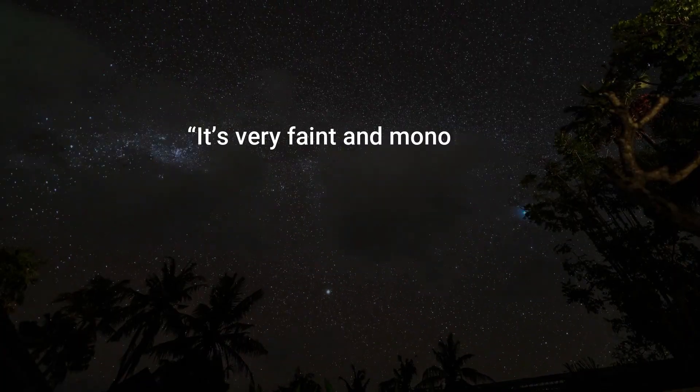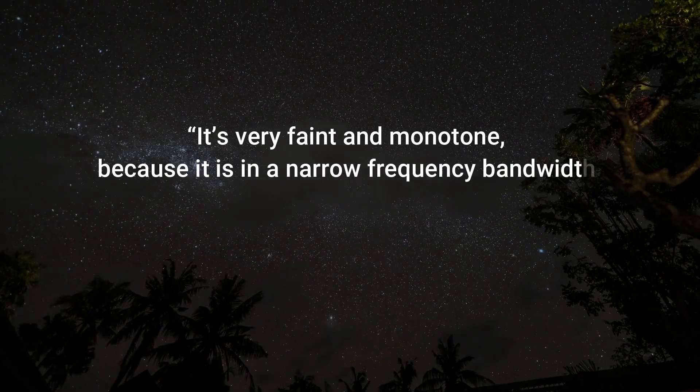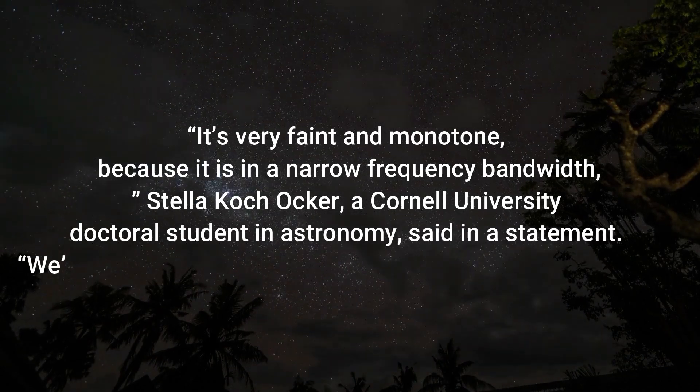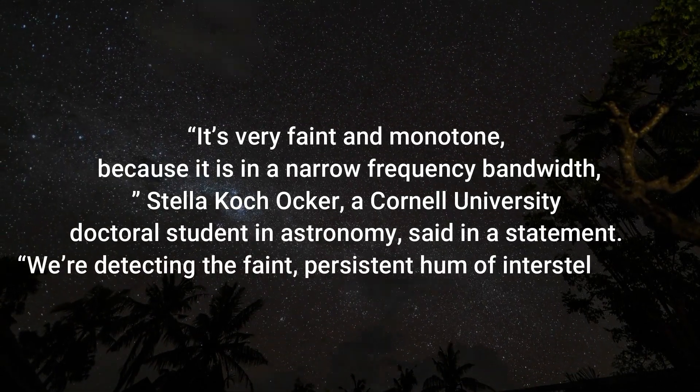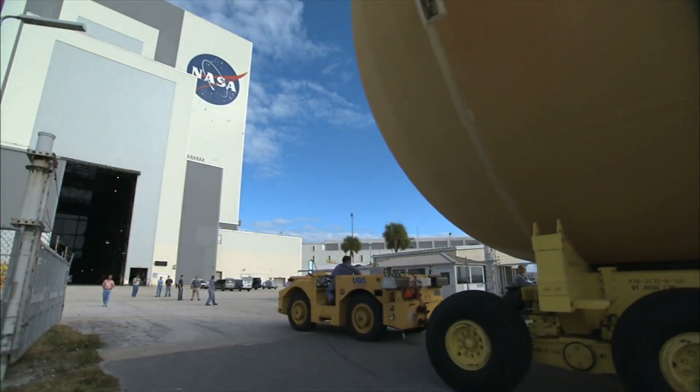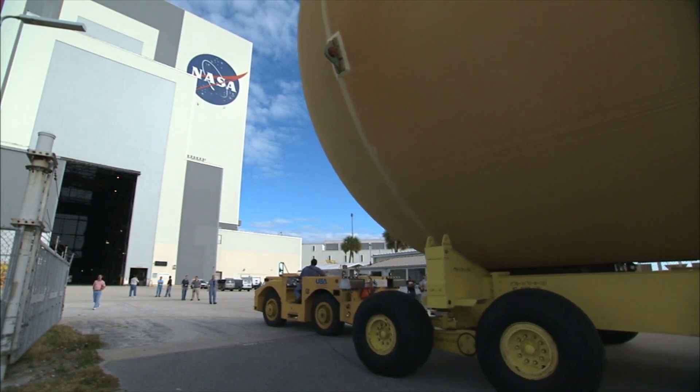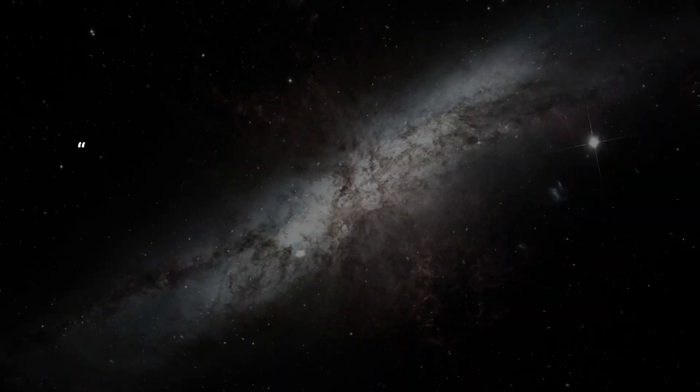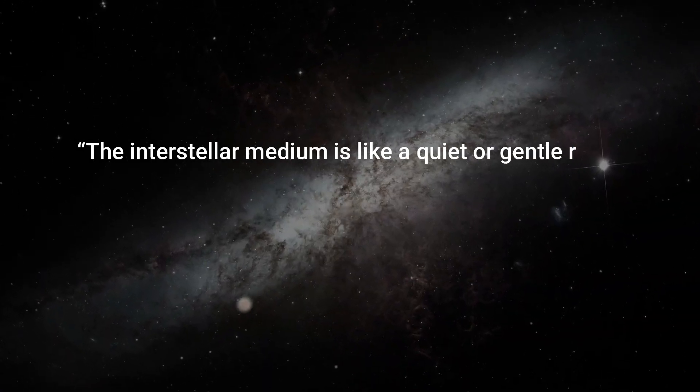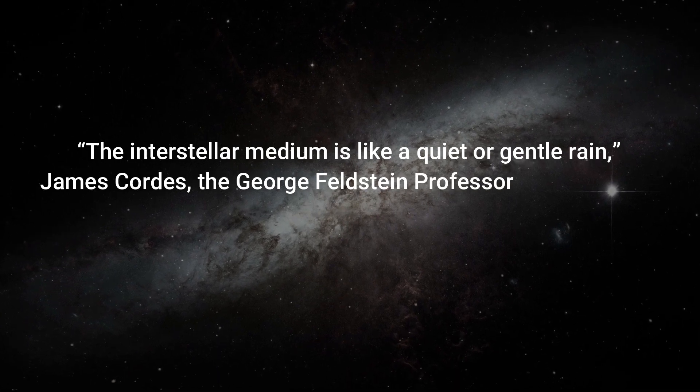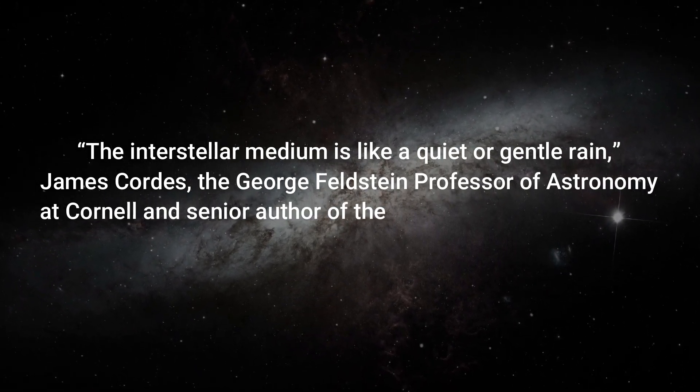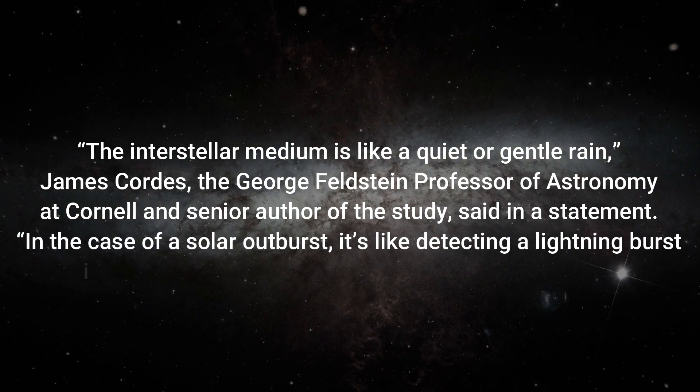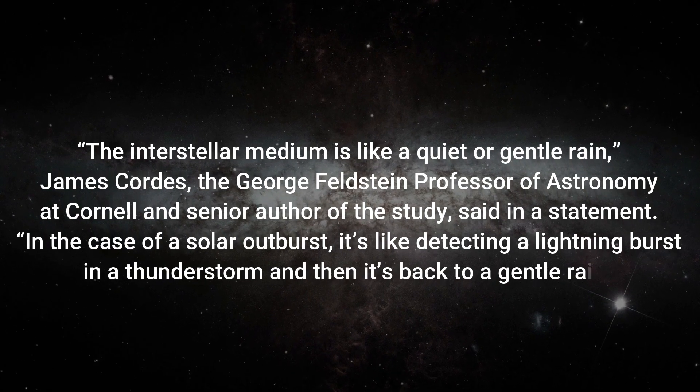It's very faint and monotone because it is in a narrow frequency bandwidth, Stella Koch-Ocker, a Cornell University doctoral student in astronomy, said in a statement. We're detecting the faint persistent hum of interstellar gas. NASA's Voyager 1 spacecraft flew by Jupiter in 1979 and Saturn in 1980 before crossing the Heliopause in August 2012. The interstellar medium is like a quiet or gentle rain. James Cordes, the George Feldstein Professor of Astronomy at Cornell and senior author of the study, said in a statement. In the case of a solar outburst, it's like detecting a lightning burst in a thunderstorm and then it's back to a gentle rain.